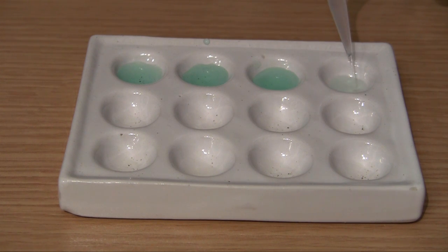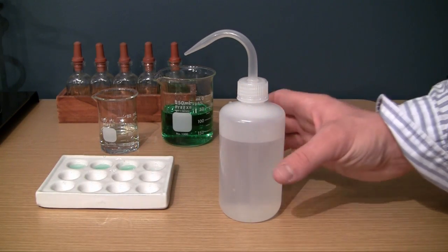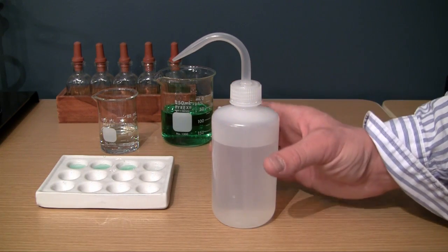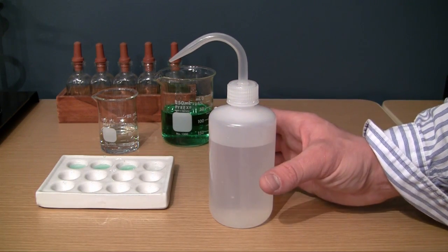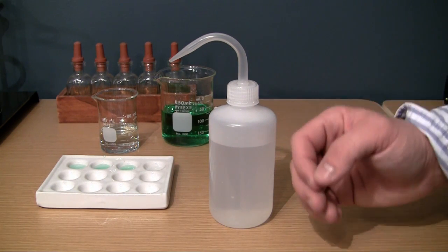These wash bottles are usually made of very thin plastic, and they're made this way because it makes it a lot easier whenever you're squeezing the solution out. But since they're made of such thin plastic, it's a good idea not to store chemicals in these for a long period of time.